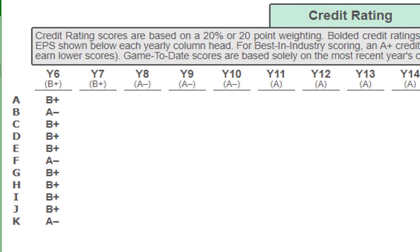Next we have credit rating. As you can see, we have several B pluses and a couple of A minuses. Like I said in previous videos, I'm not too concerned. My guess would be by year eight or nine, everyone will probably be at least within the A minus range.